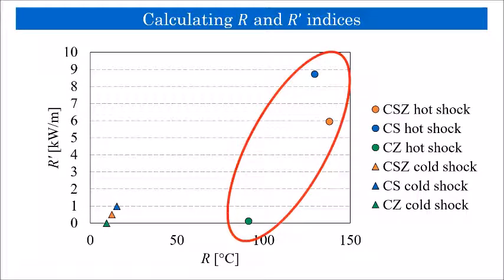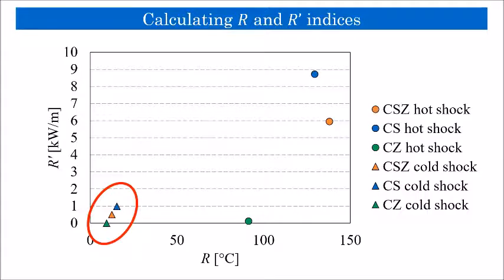Circles represent the value of these indices for hot shock scenario, or sudden temperature raise, and triangles represent those values for cold shock scenario, or sudden temperature drop.